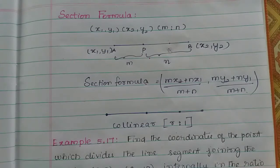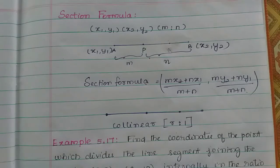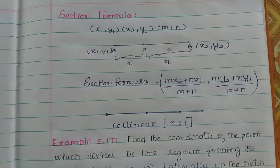In the previous video, we covered tri-section. What is the section formula? You can divide a line into three equal parts. You can use a line for how many parts you need. The mid-point gives two equal parts, and tri-section gives three equal parts.